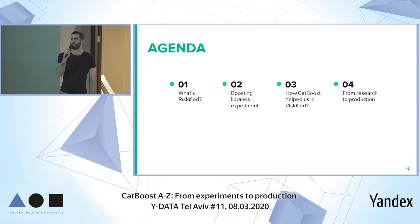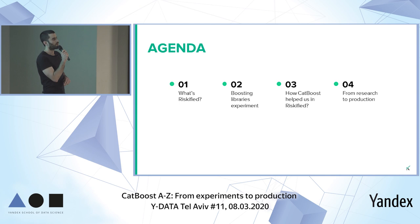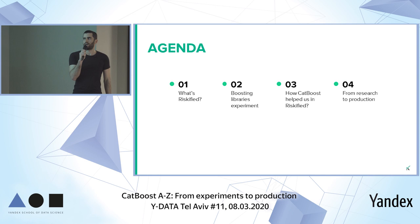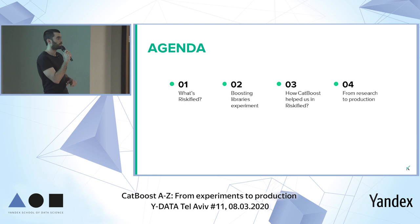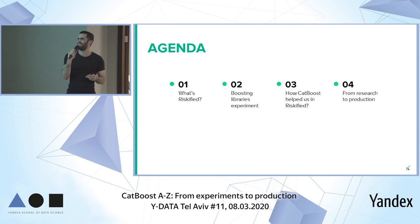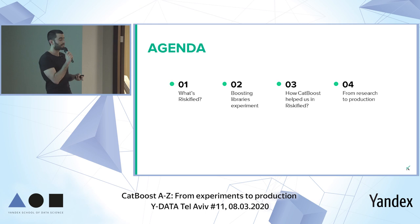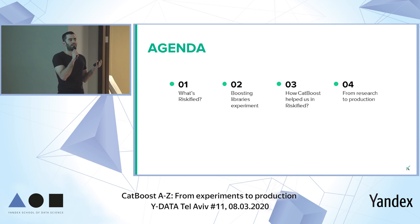So what are we going to speak about today? A little bit about Riskified to understand the domain and learn what type of task we're dealing with — the machine learning part at Riskified. After that, we're going to speak about a boosting libraries experiment. Last year we had a comprehensive experiment to compare the leading boosting libraries. Then we'll see how CatBoost helped us at Riskified, and eventually we'll talk about how we implemented CatBoost in production, whether it was smooth or not.